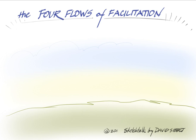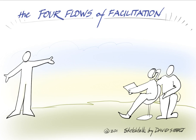I've got here a little background sketched out with the four flows indicated by colors, and you can see right away just from this simple horizon line that it represents the landscape. So let's get some people on here. Here's a facilitator and a representative group, and a facilitator has to pay attention to different things.